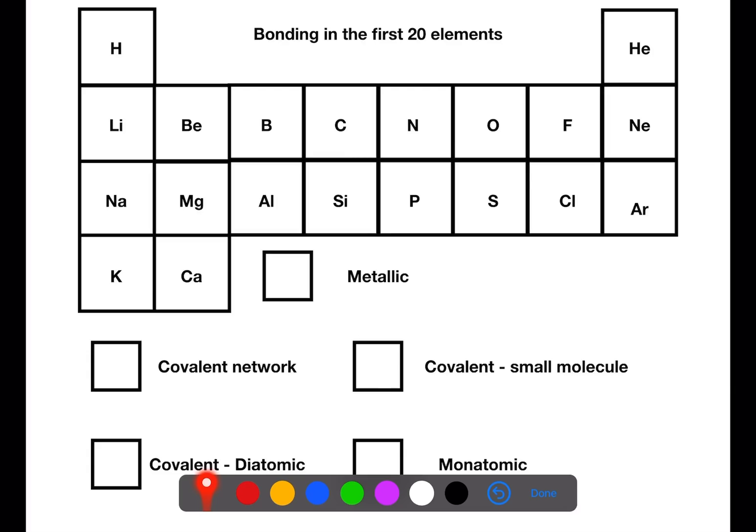Let's start with the metallic elements. We'll shade the metallic elements in as red. So the metallic elements that we have are lithium, sodium, potassium, beryllium, magnesium, calcium, aluminium.